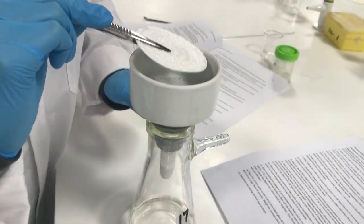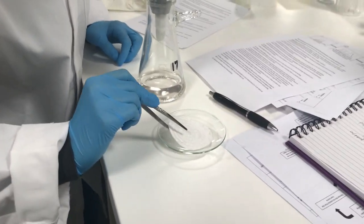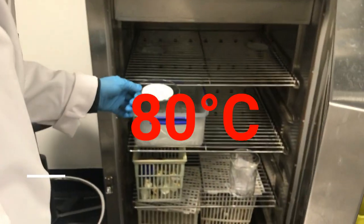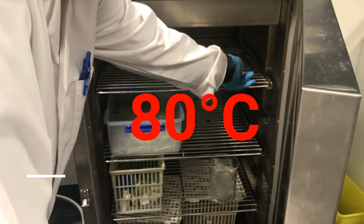Using tweezers, transfer the filter paper from the Buchner funnel onto a watch glass. Then place the watch glass into the oven to dry at 80 degrees Celsius for no longer than 10 minutes.